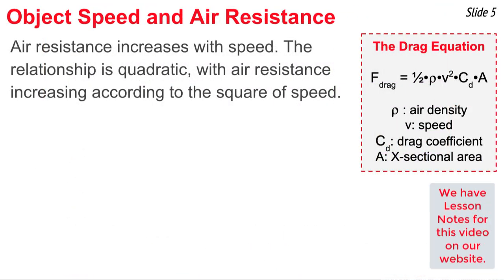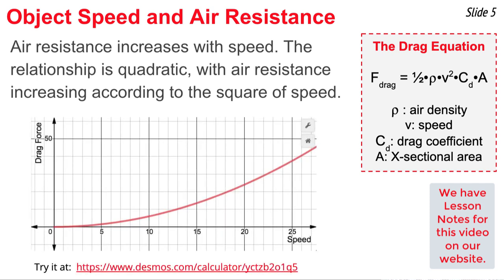Air resistance also depends upon the speed of the object. As the drag equation or air resistance equation indicates, the force of air resistance depends upon the speed squared. This means that a doubling of the speed would cause a quadrupling of the air resistance. It's a quadratic relationship, as shown in this graph.